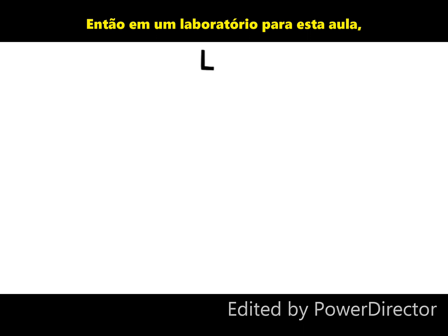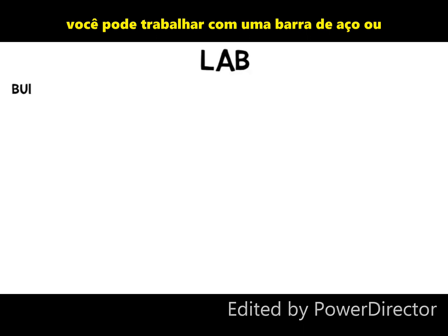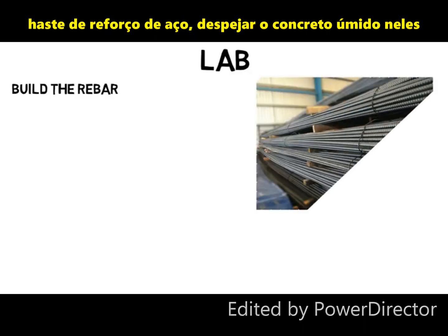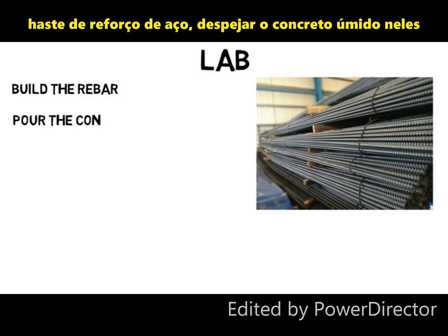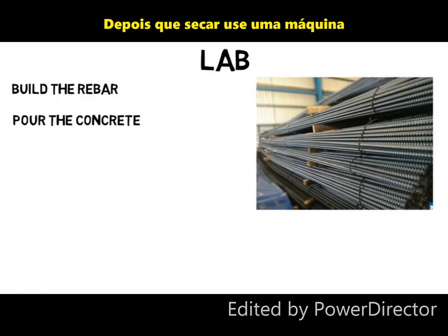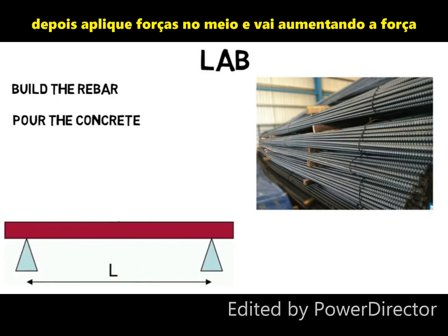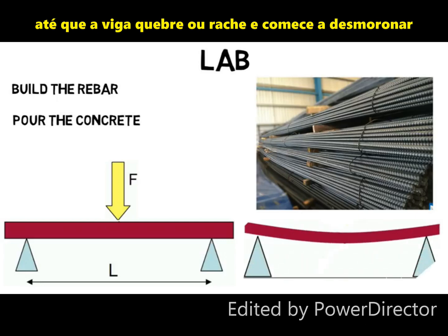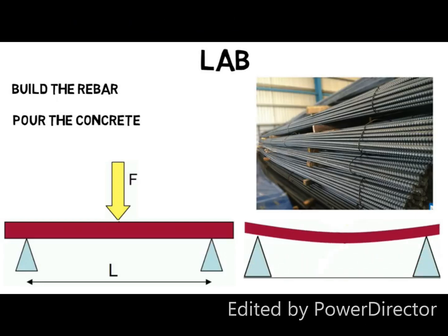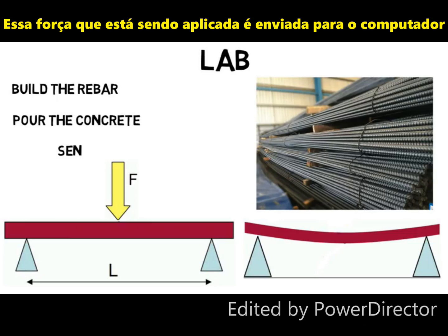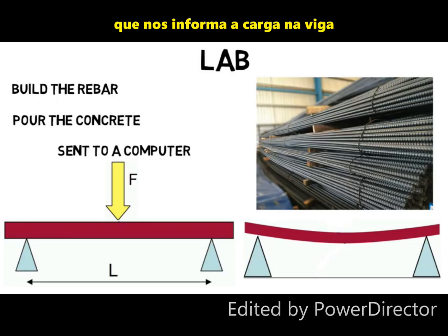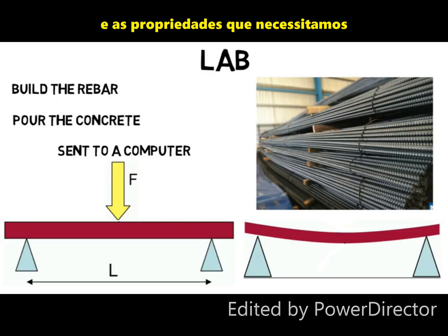So in a lab for this class, you might build the rebar or the steel reinforcing rods, pour the wet concrete onto them, then once it dries, use a machine that holds the beam on both sides, then apply forces in the middle and keep increasing the force until the beam breaks or cracks and starts falling apart. That force being applied is sent to a computer that tells us the loading on the beam so we can collect the data and get the properties that we need.